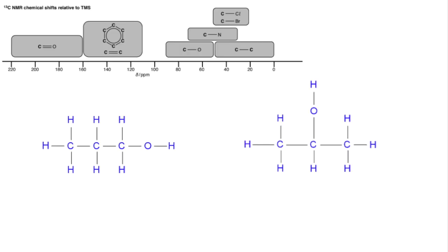We'll look at a couple of alcohols that are structural isomers of each other: propan-1-ol on the left and propan-2-ol on the right. For propan-1-ol, we've got one, two, three environments. People sometimes think the two CH2 carbons are the same, but one is directly bonded to an oxygen whereas the other is directly bonded to a carbon, so they are different environments. The CH3 carbon is obviously unique.